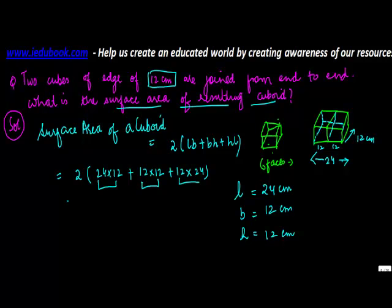Now you can do these calculations: 2 times (24 into 12 will give you 288 plus 144 plus 24 into 12 again 288). This equals 2 into 720, which is 1440. So the surface area of the cuboid will be 1440 square centimeters.